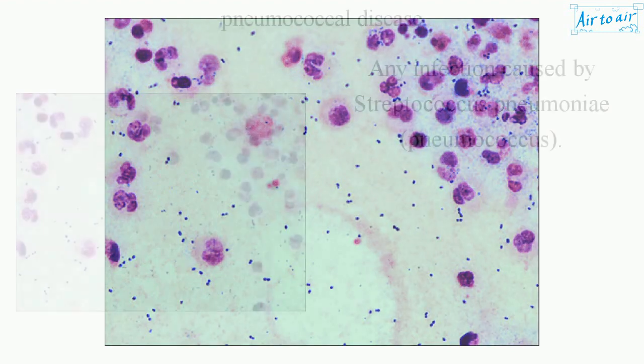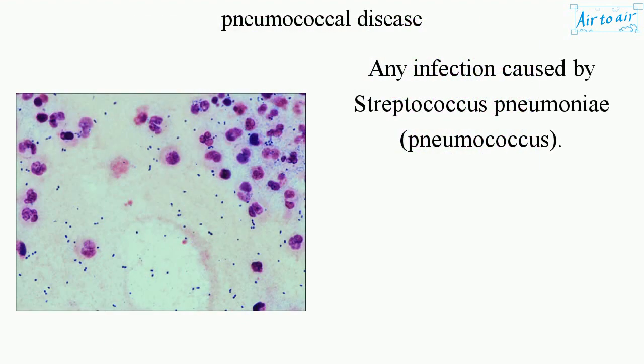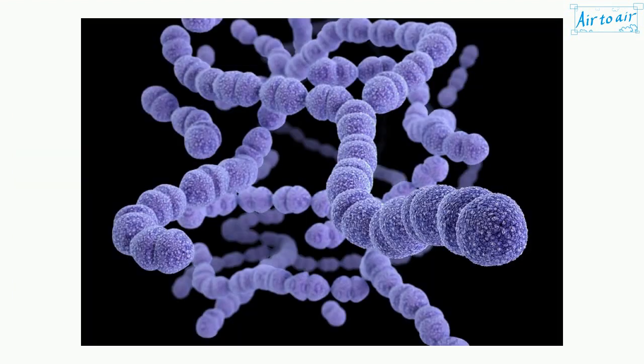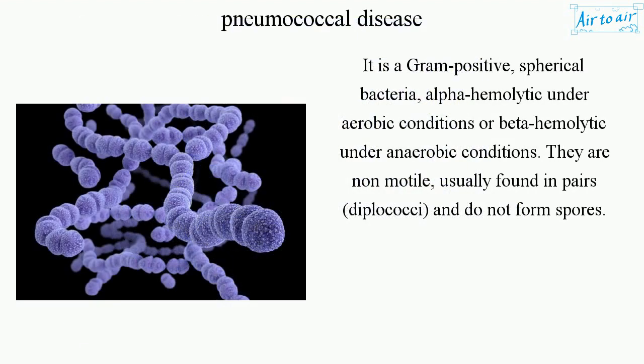Pneumococcal disease — any infection caused by Streptococcus pneumoniae, pneumococcus. It is a gram-positive, spherical bacteria, alpha-hemolytic under aerobic conditions and beta-hemolytic under anaerobic conditions. They are non-motile, usually found in pairs (diplococci), and do not form spores.